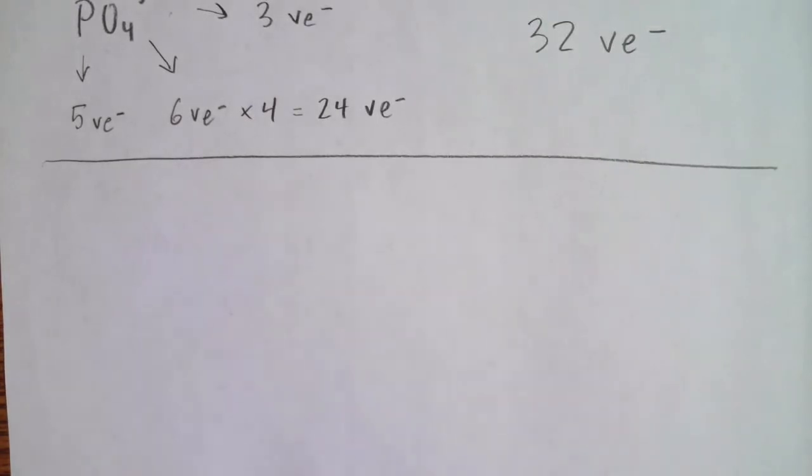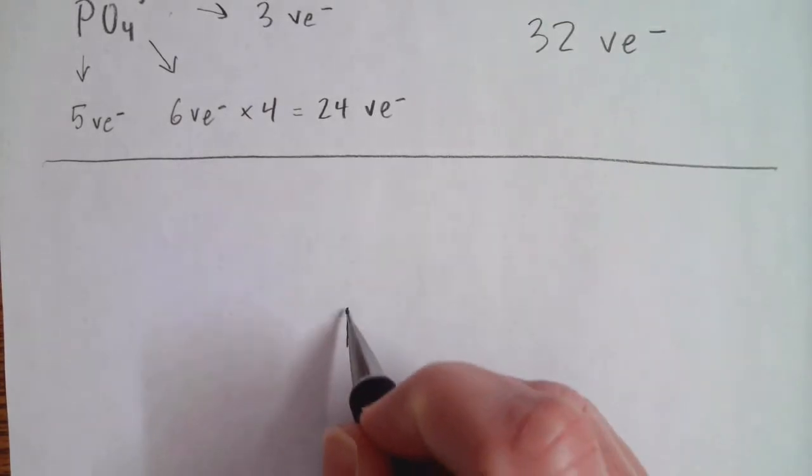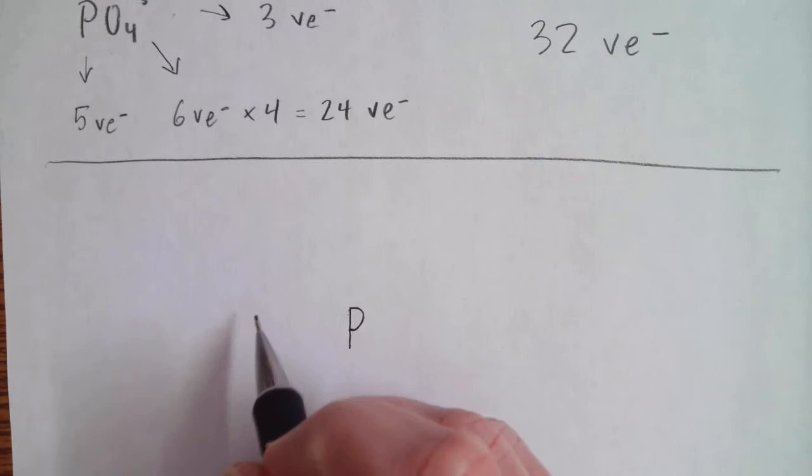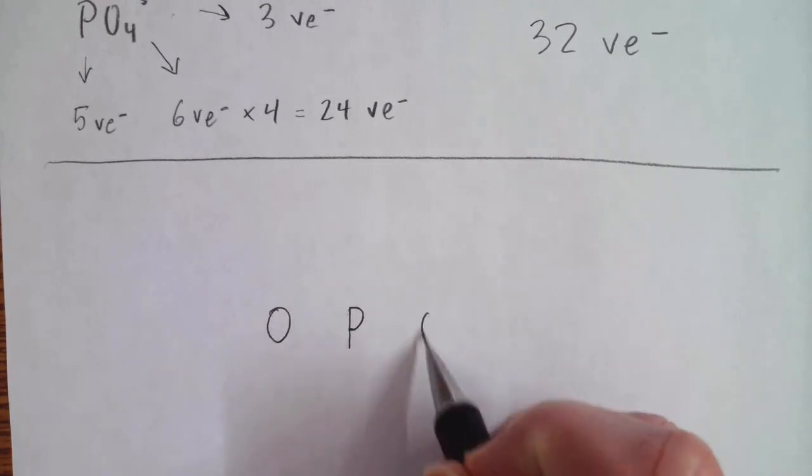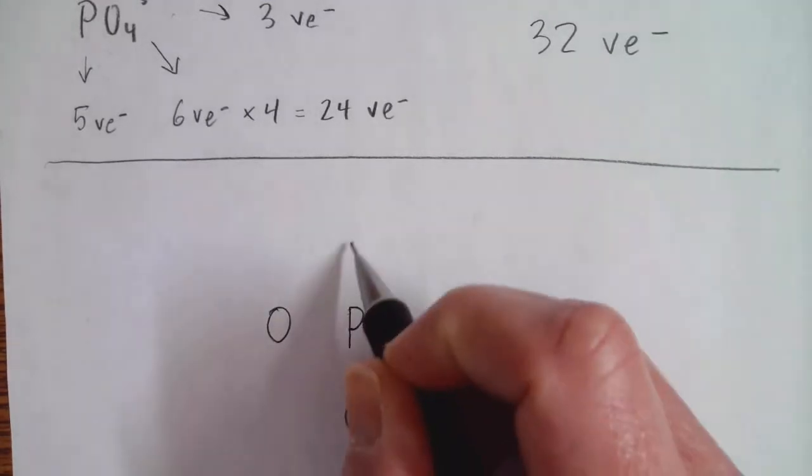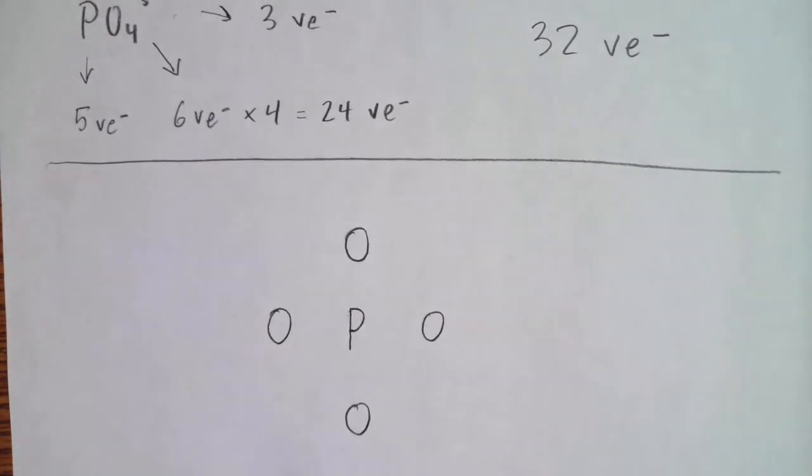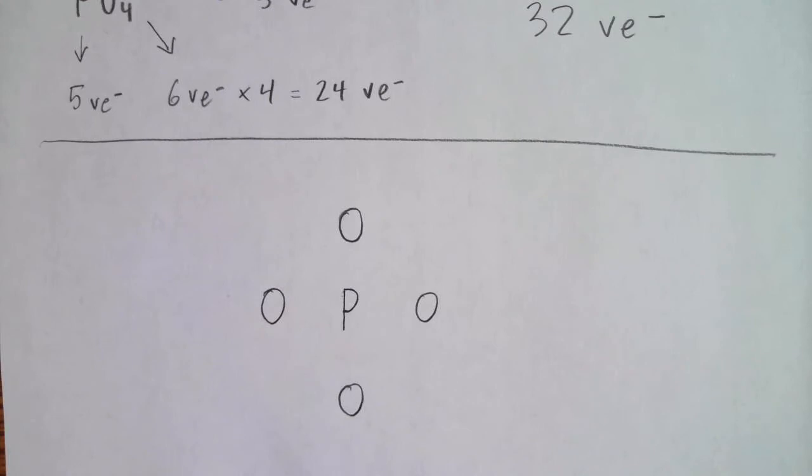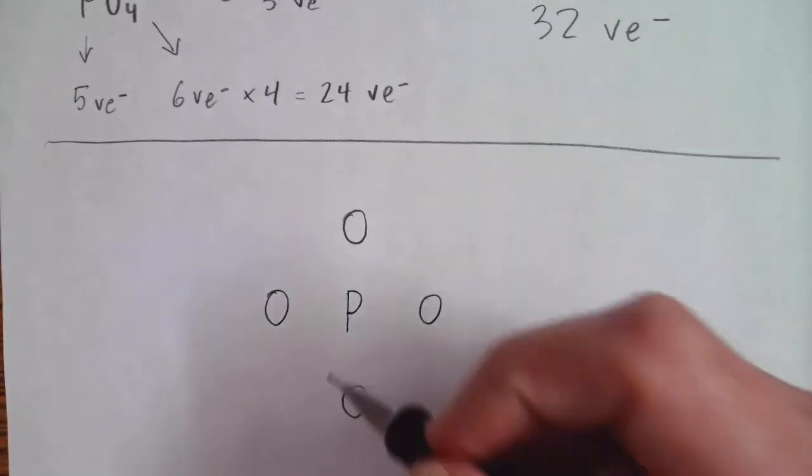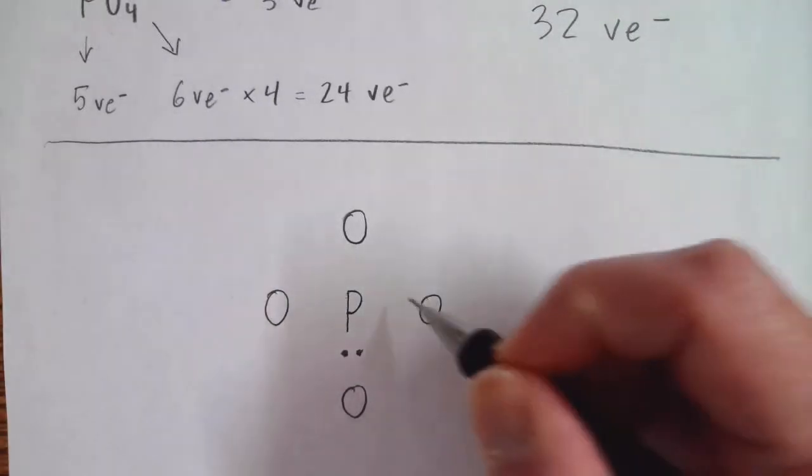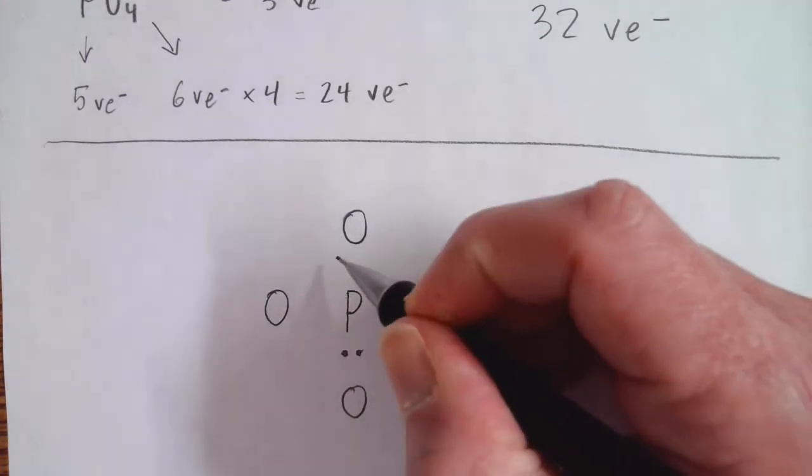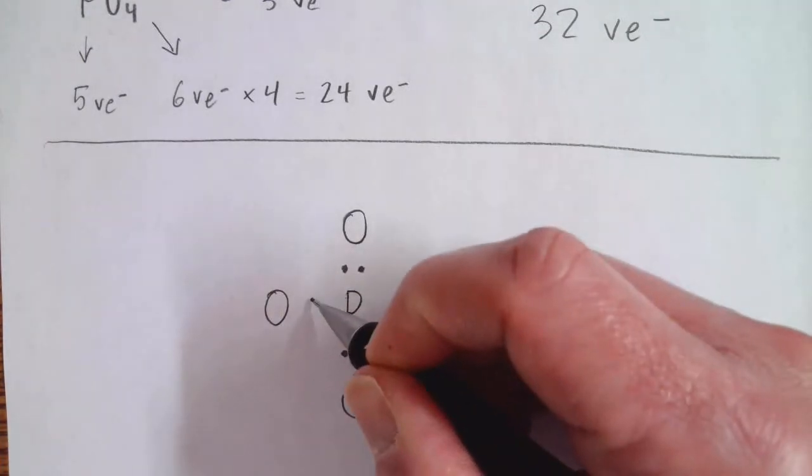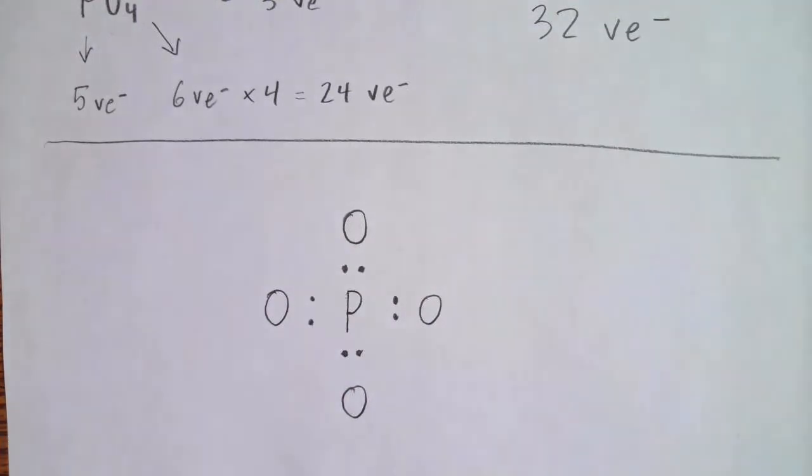So next I'm going to put my central atom in the middle and my oxygen atoms arranged around the central atom. And my suggestion is always to start with single bonds. So I'm going to represent that as two electrons between the central phosphorus and each oxygen atom.